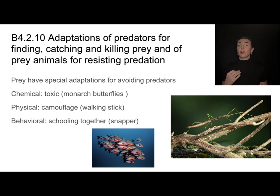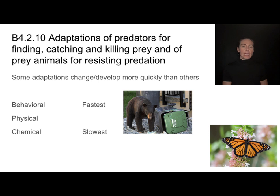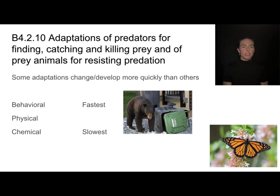Some of these adaptations evolve faster than others. Behavioral adaptations can happen very quickly — in the course of a couple of generations. For example, bears 2,000 years ago didn't know they should topple trash cans and eat everybody's leftovers, but now that humans and bears interact more often, bears are exploiting that opportunity and have behaviorally adapted. Behavioral changes are much faster than chemical adaptations, which tend to be the slowest, with physical adaptations somewhere in between.